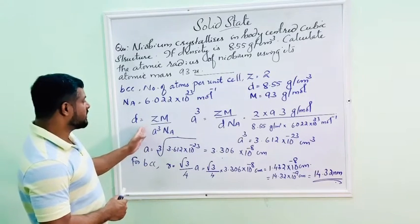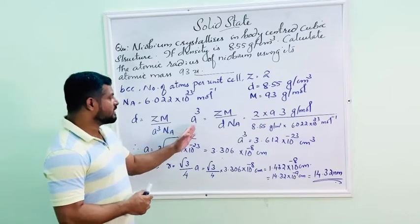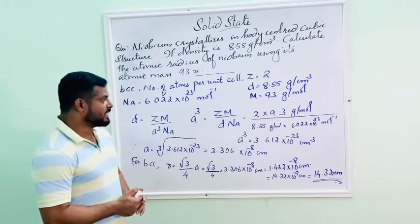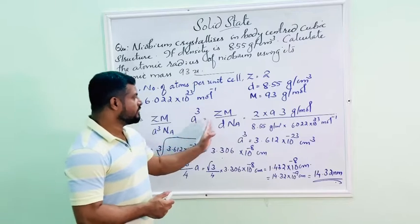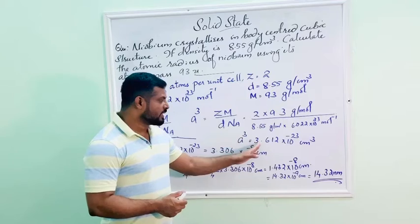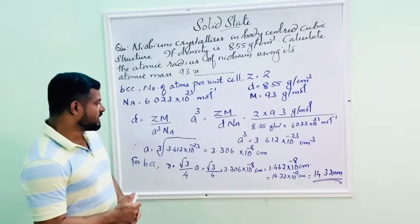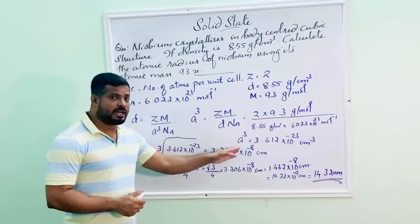We have the equation: D equals ZM divided by A cube NA. From that, we will reduce the formula of A cube. Substitute the value in the given equation. Then, we will get the value of A cube is equal to 3.612 into 10 raise to minus 23. Here we get the value of A cube.